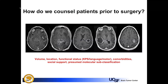Each and every day, we are faced with counseling patients about surgery. These are characteristic images of patients we see when they present in the emergency room or in clinic. For each of these situations, we immediately think about how we are going to counsel the patient, considering factors such as tumor volume, location, functional status, pre-morbid medical conditions, their social support, and we make inferences about molecular classification and what that might mean.